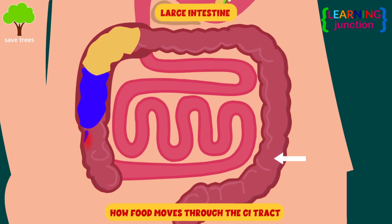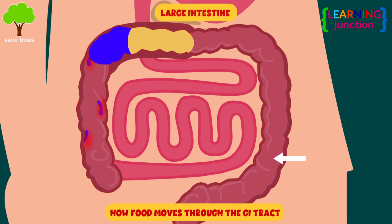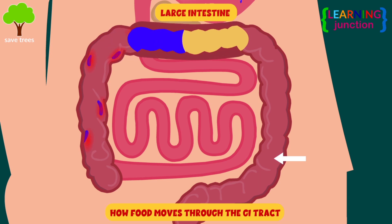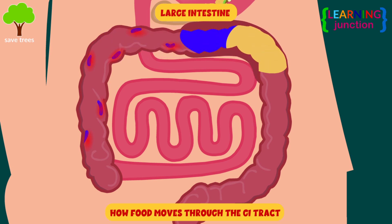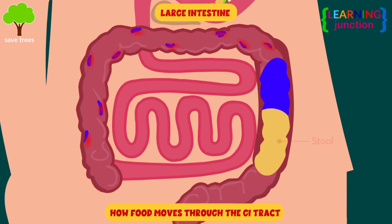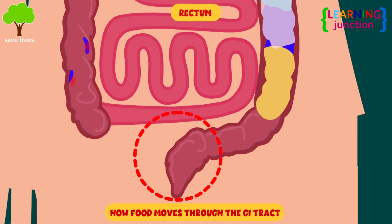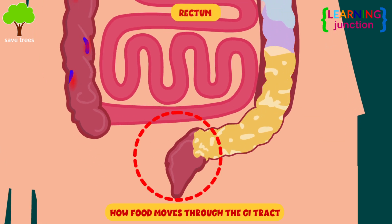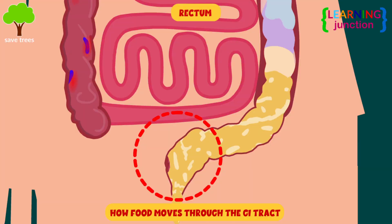Large intestine — your large intestine turns waste products into stool and pushes the stool into your rectum. Rectum — it collects and holds your poop until it's time to release it.